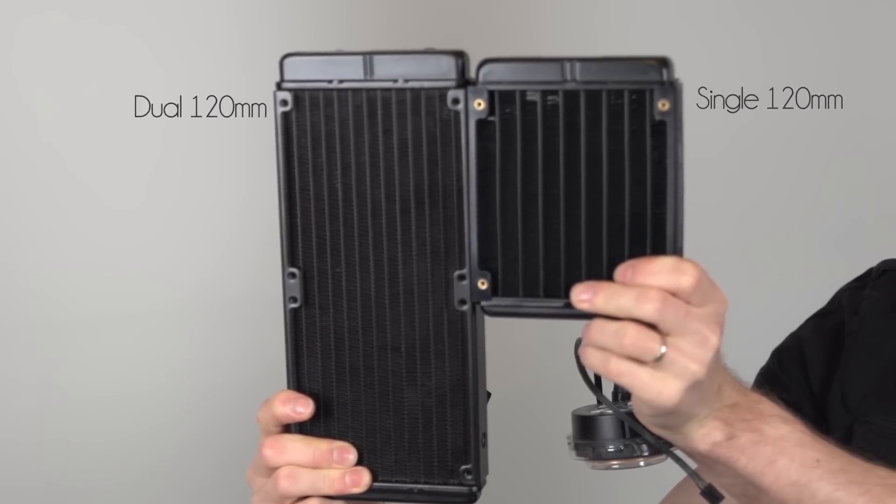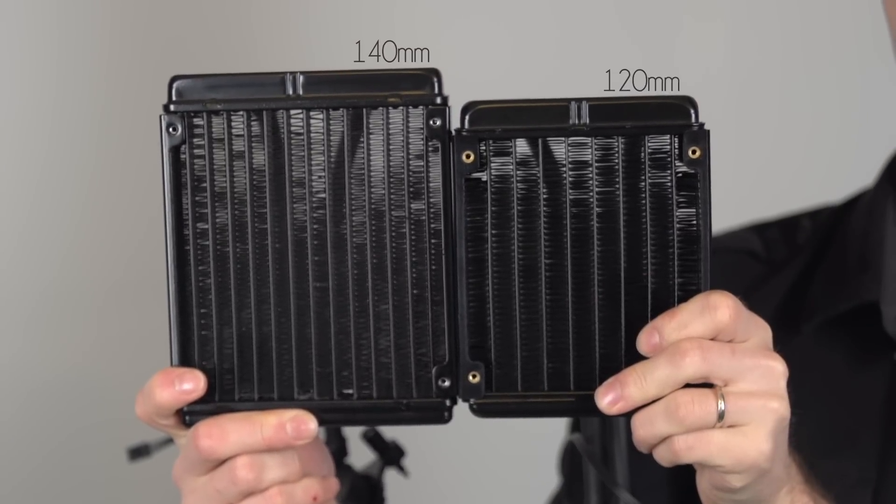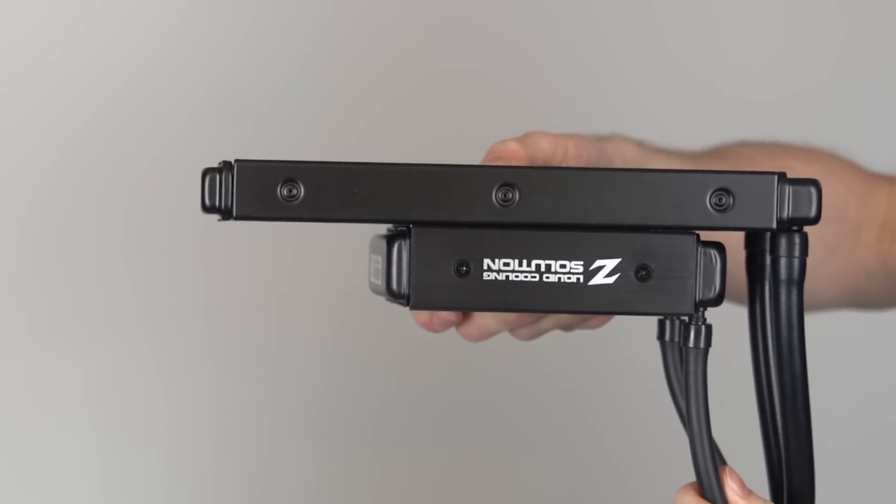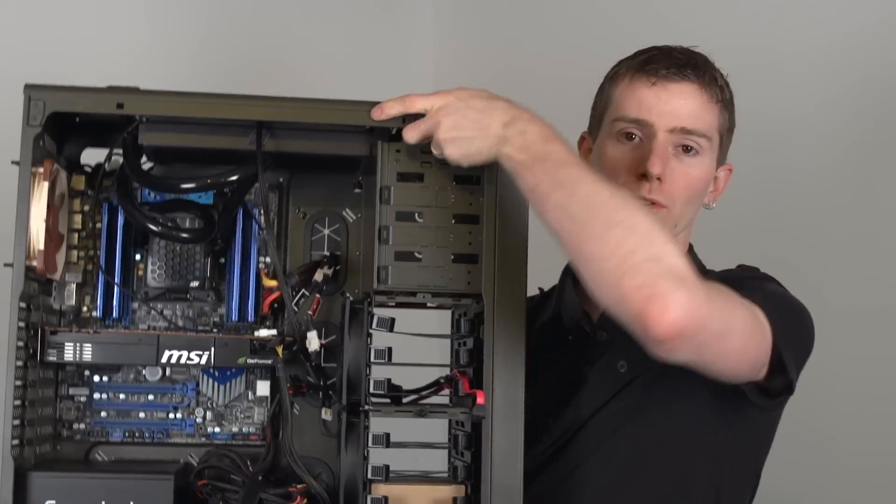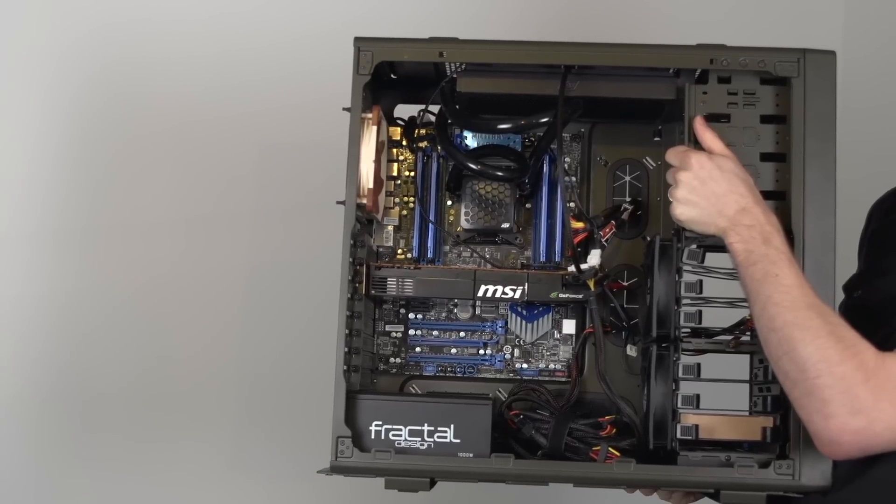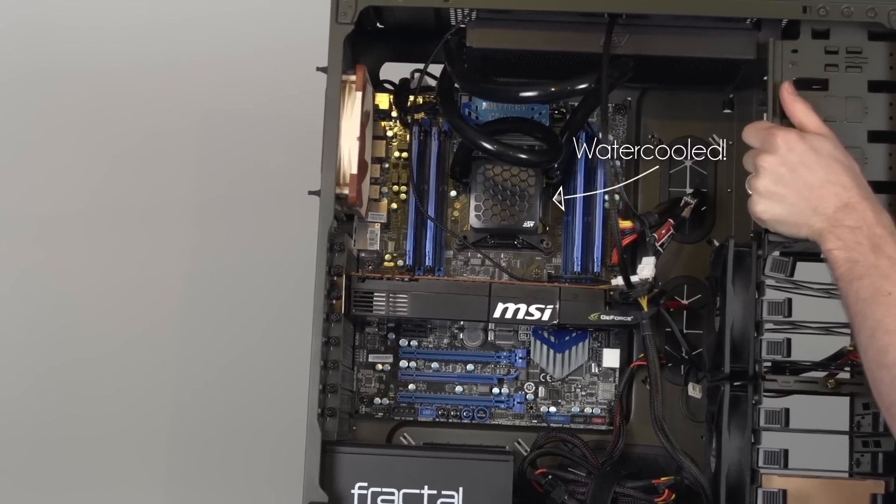So while they come in a variety of configurations, thick radiators, thin radiators, 120mm, 140mm, single radiator, dual radiator, you're going to have to plan for it. If you don't have a large gaming-oriented chassis, there's a chance that a liquid cooler like this won't even fit in your system.